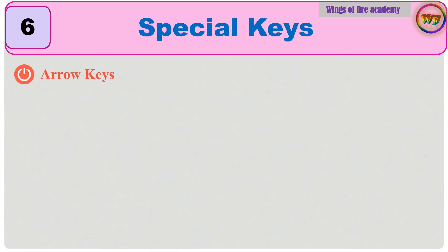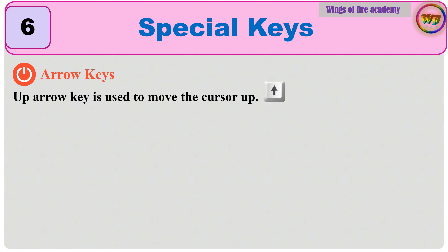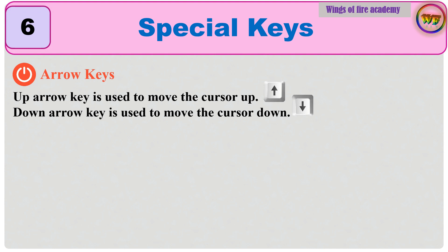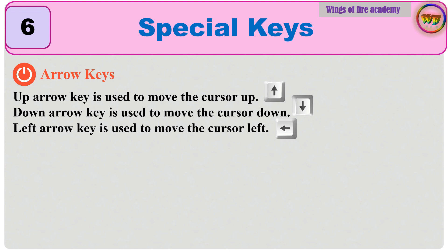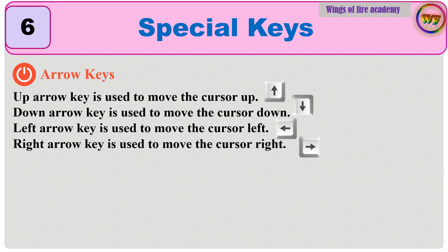Arrow keys: Up arrow key is used to move the cursor up. Down arrow key is used to move the cursor down. Left arrow key is used to move the cursor left. Right arrow key is used to move the cursor right.